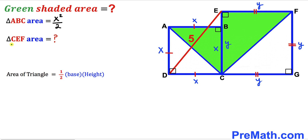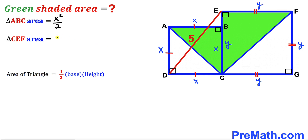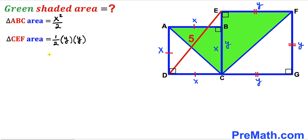Likewise, let's take care of the area of triangle CEF. Using the same area of a triangle formula: area = (1/2) × base × height. The base of this triangle is Y and the height is Y as well. So the area of triangle CEF is (1/2) × Y × Y, which simplifies to Y² / 2.